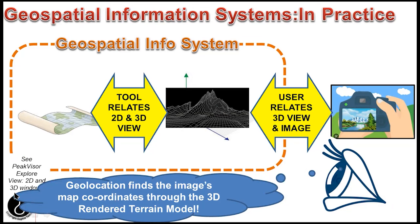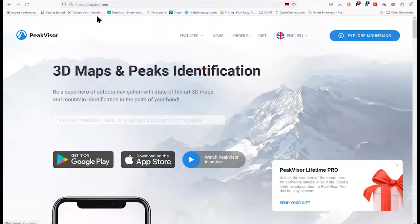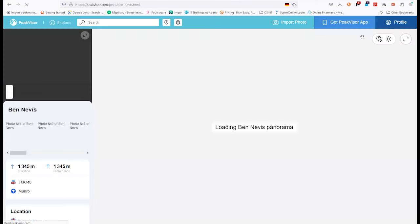So let's go look at PeakVisor now. You can join me during any of these exercises, just work alongside me — if you have two screens, it's going to be a lot easier. Here it is, in all its glory, in Firefox at https://peakvisor.com. We'll go past the first page, which I'll talk about later, and go straight to 'Explore the Mountains'.